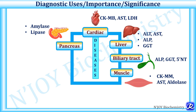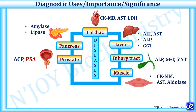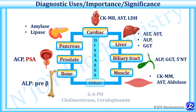Prostate disease is indicated by increased levels of acid phosphatase and prostate-specific antigen; however, prostate-specific antigen is not an enzyme. The enzyme increased in bone diseases is the pre-beta isoenzyme of alkaline phosphatase. There are also other enzymes increased in some conditions, like glucose-6-phosphate dehydrogenase, cholinesterase, ceruloplasmin, etc.